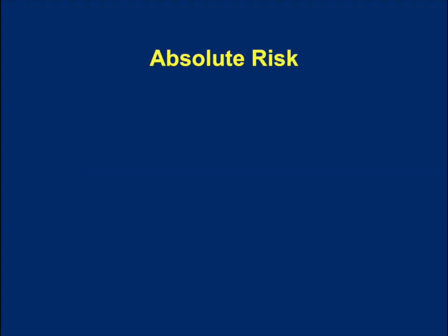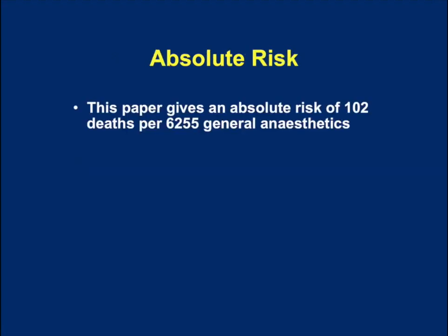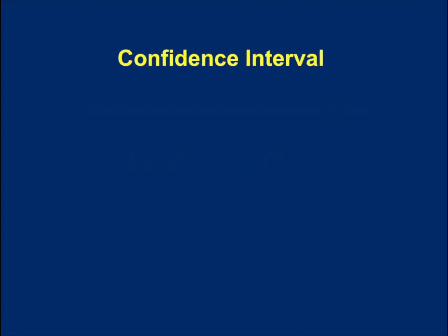This paper gives us an absolute risk figure based on 102 deaths out of 6,255 general anaesthetics, giving a rate of 1.6% excluding euthanasia. If we're going to use this figure, we want to know how certain we are that it is the right figure — what is the range in which we can be confident?